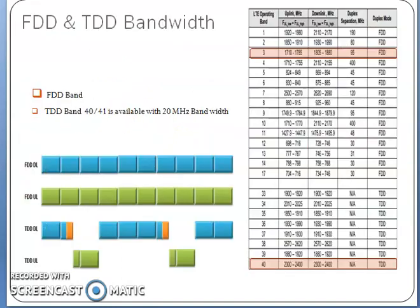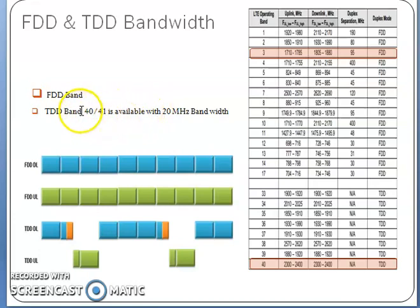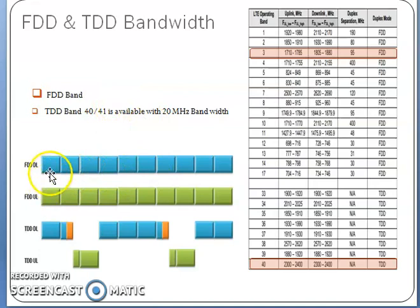Next: FDD and TDD bandwidth. FDD bands include 1800 MHz and 900 MHz. TDD bands include band 40 and band 41, with frequencies around 2500 MHz and 2300 MHz. Band 40 and 41 are used for TDD. Band 3 is used for FDD. In FDD, one frequency is used for downlink and another for uplink.